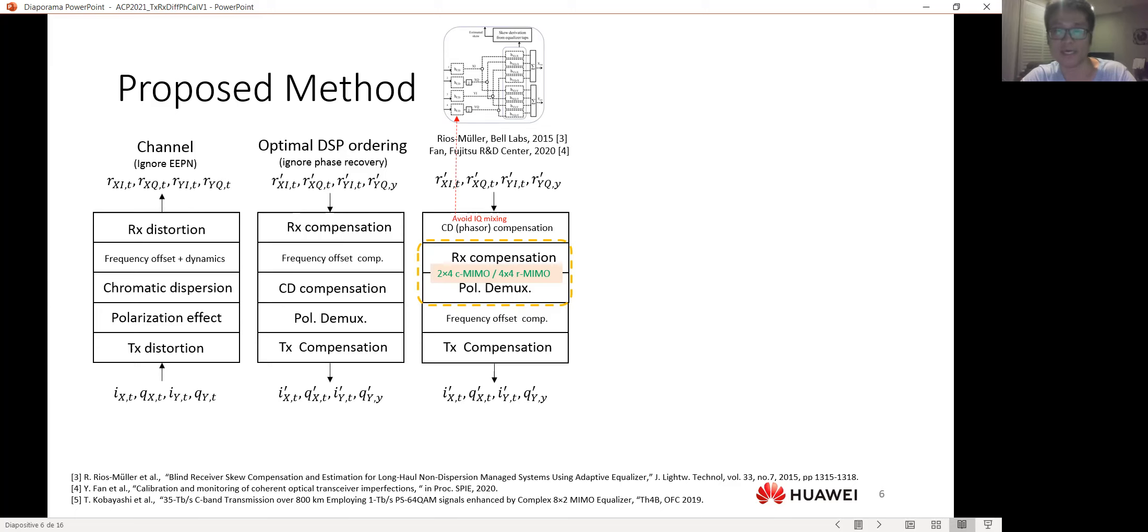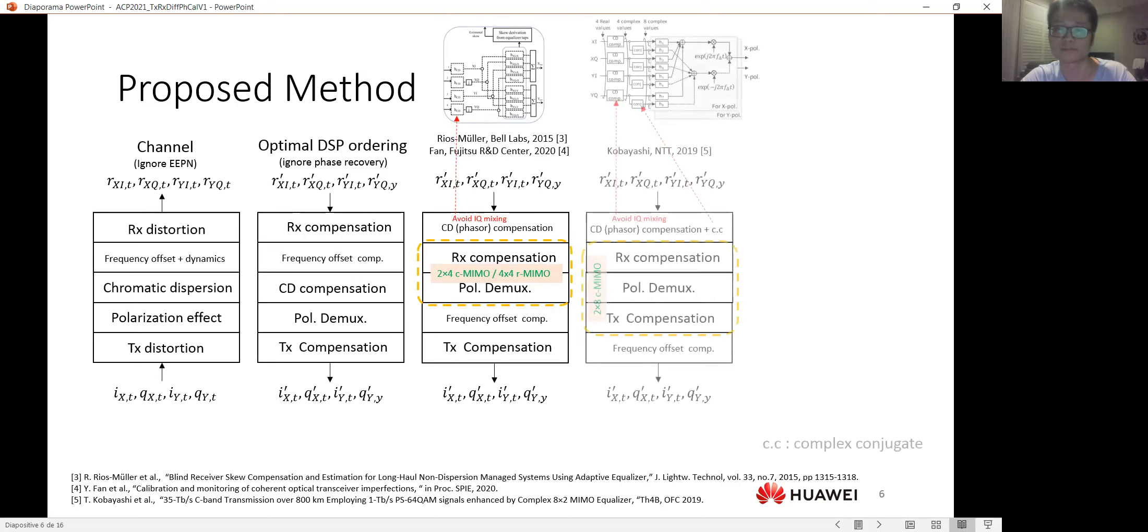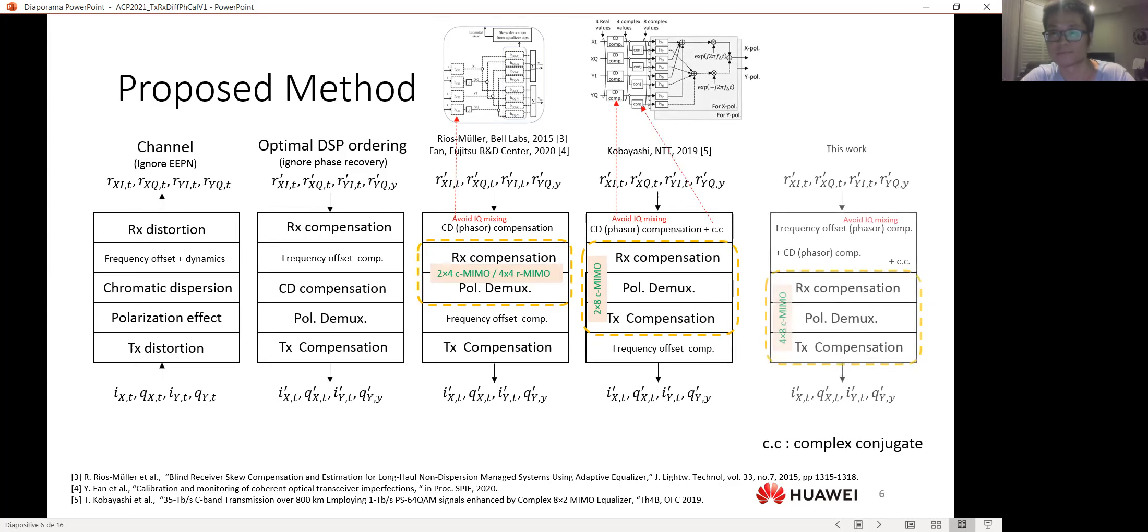Also, we need to multiply each ADC branches using a complex spacer in order to avoid IQ mixing. For the NTD approach, we shift the frequency offset compensation behind the transmitter compensation. And also, we have to use the complex conjugate of the inputs.